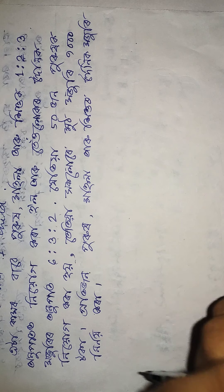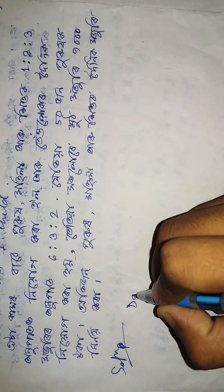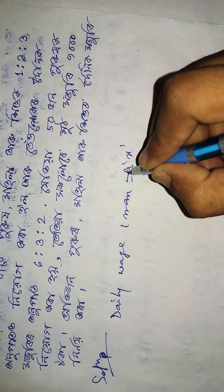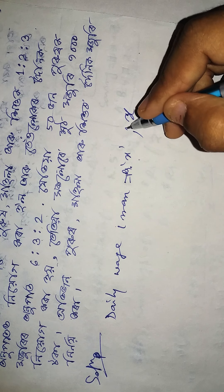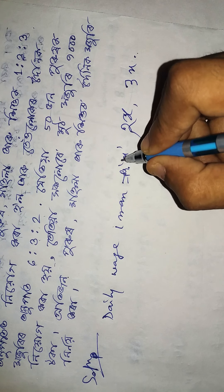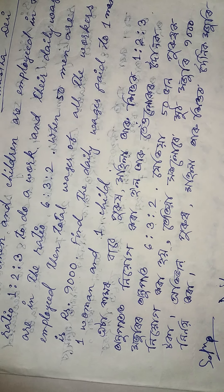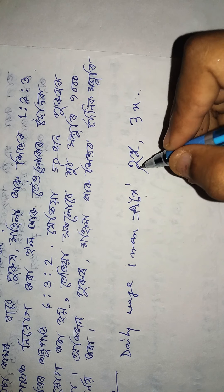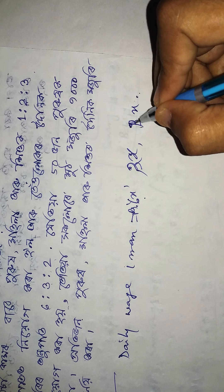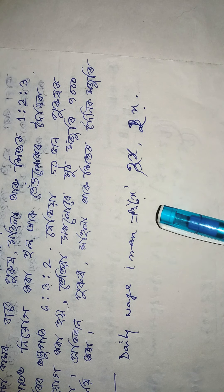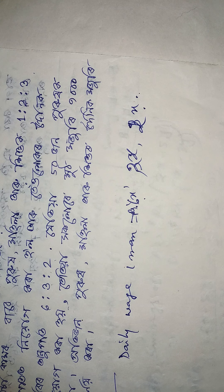We assume the daily wage of one man is Rs. 6x, the daily wage of one woman is Rs. 3x, and the daily wage of one child is Rs. 2x, since the ratio of their daily wages is 6:3:2.